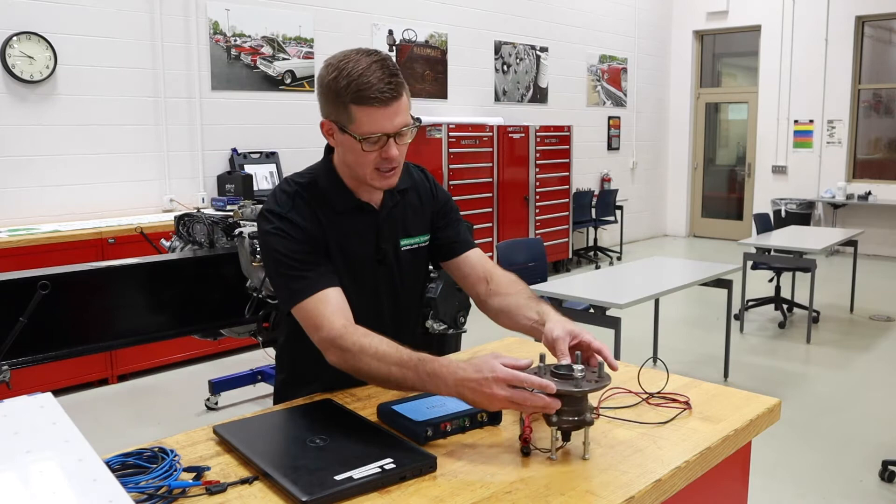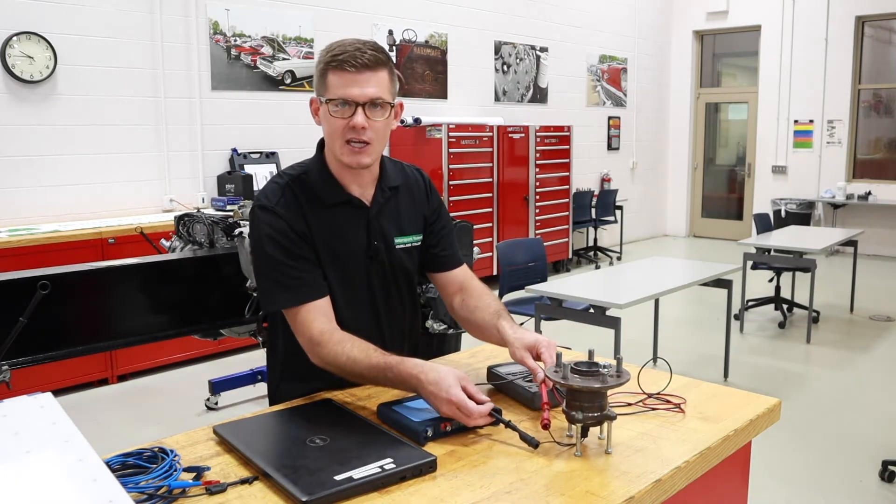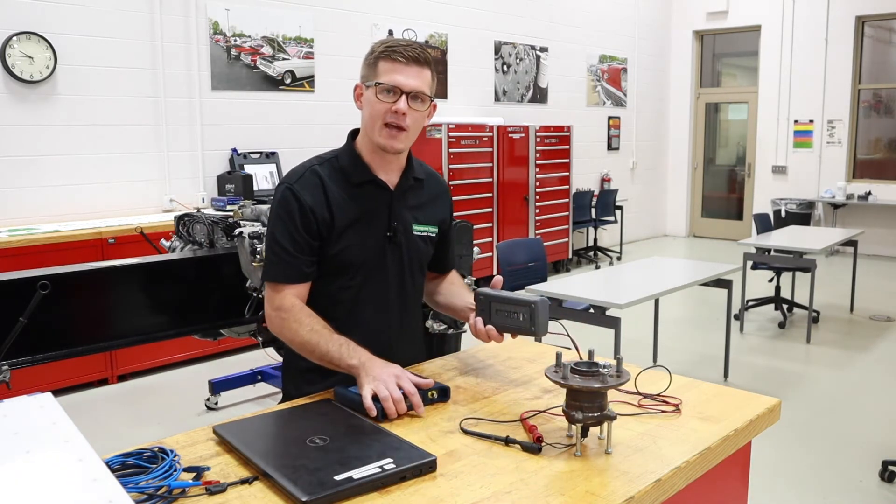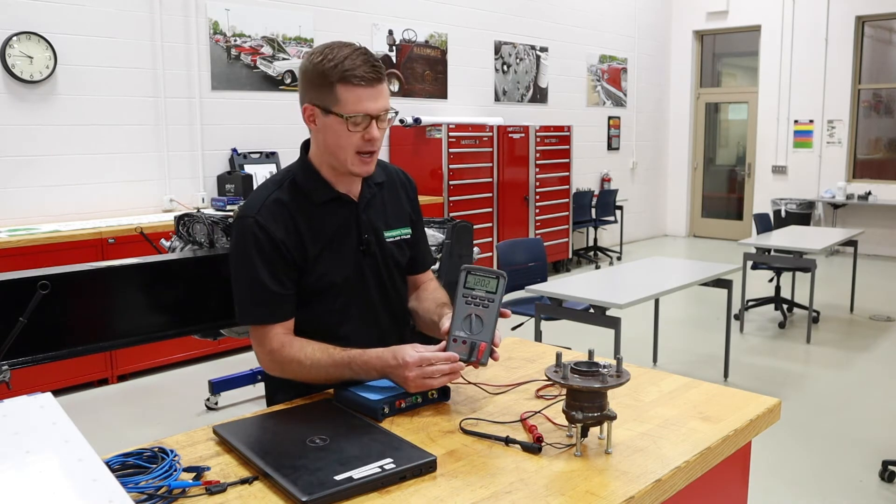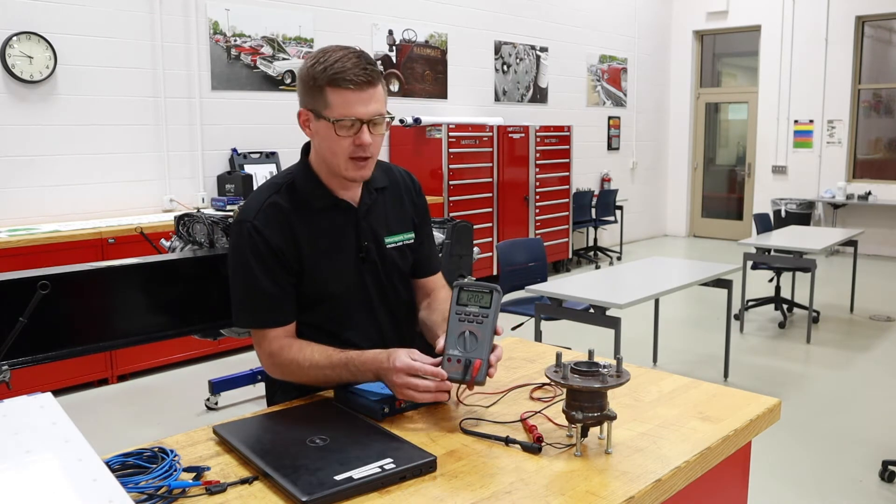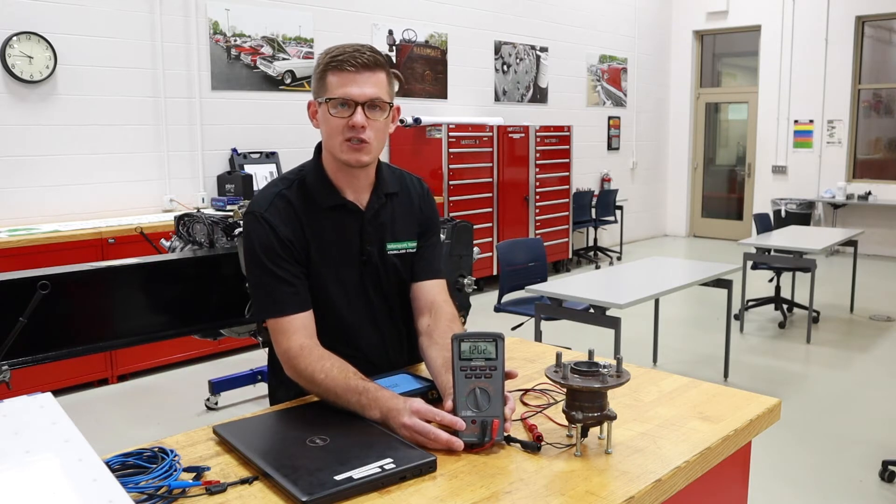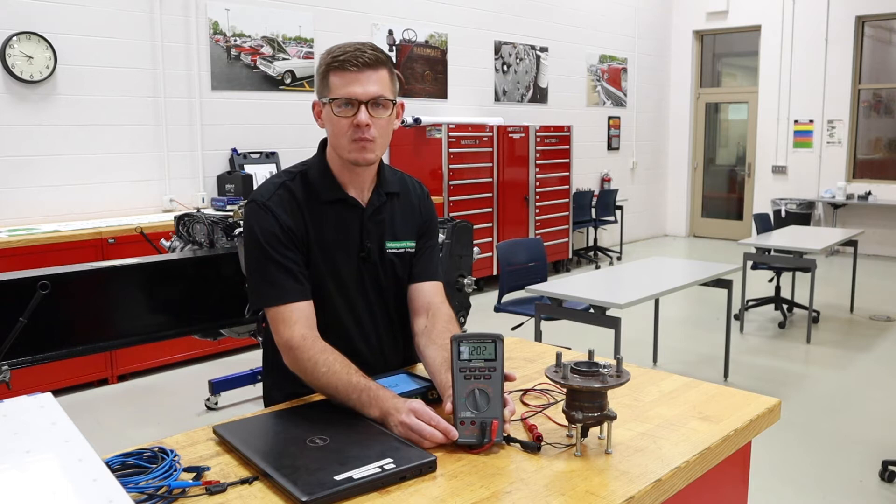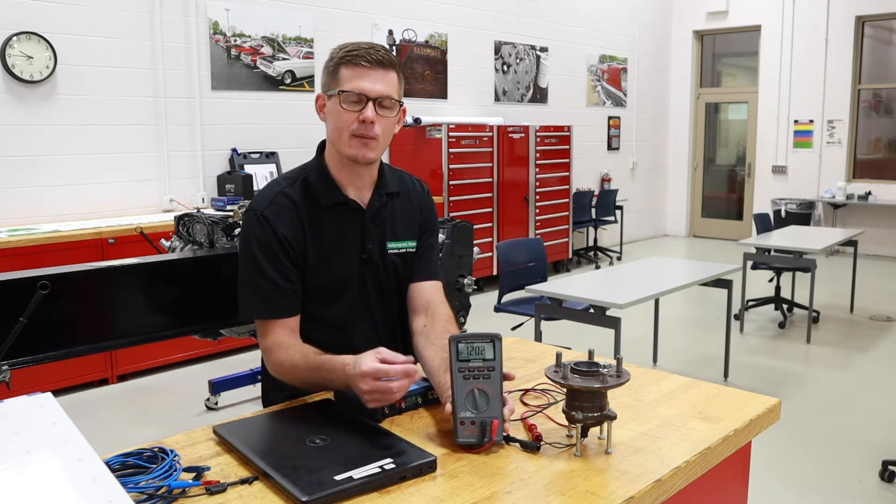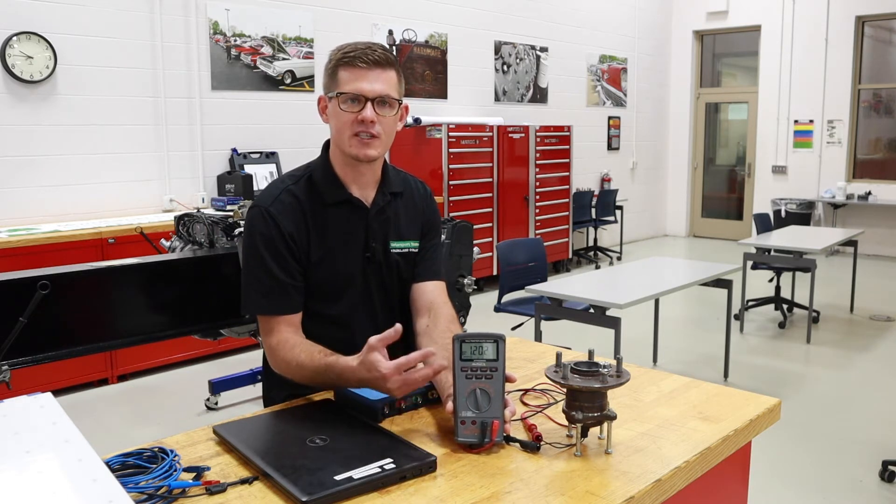So if I take my meter and get it set up like this, I've just got each connection on a wire for that sensor. I'm going to go to resistance on my meter and look and see what I get there. And so we're reading about 1.2 kilo ohms or 1,200 ohms for that sensor.